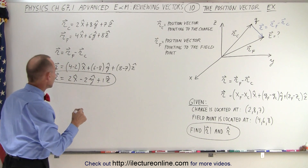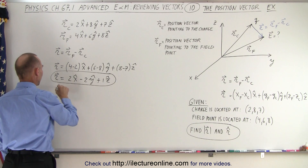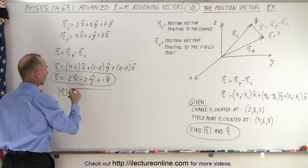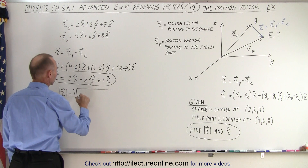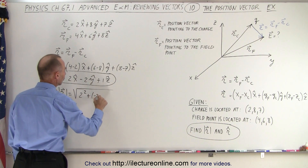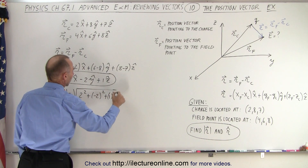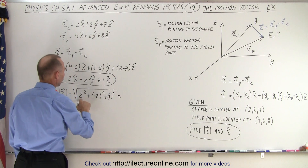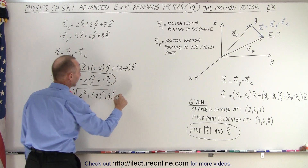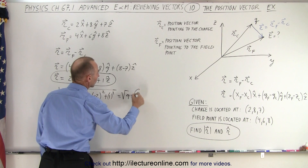Now we find the magnitude. The magnitude is the square root of the sum of the squares of the components: √(2² + (−2)² + 1²) = √(4 + 4 + 1) = √9 = 3.